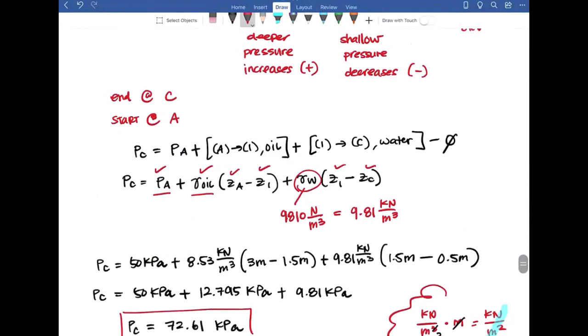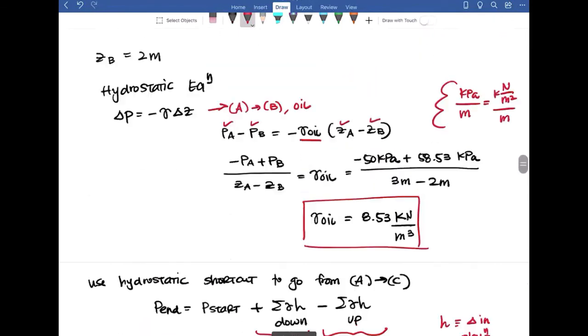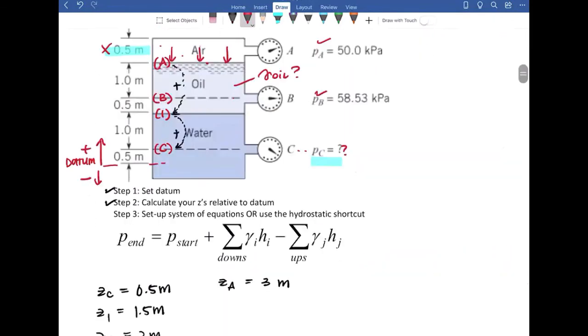You could definitely use the longer version on this problem to solve for the system of equations. So you would go from A to 1 and then 1 to C. So you would have to set up that series in order to eventually get at PC. So hopefully I demonstrate that using this hydrostatic shortcut does have its benefits. It does make things go a lot quicker. I hope you enjoy the video and I hope you learned something useful from this.